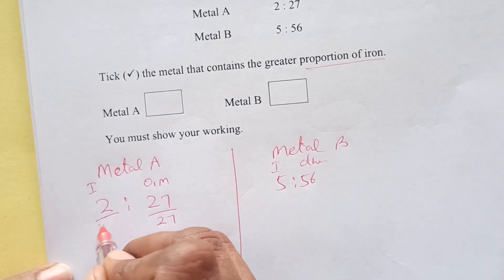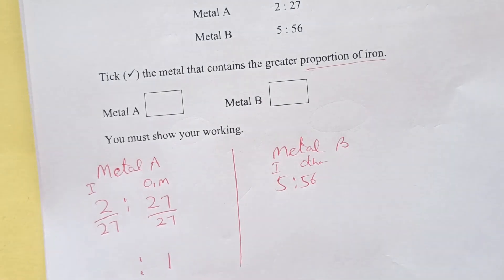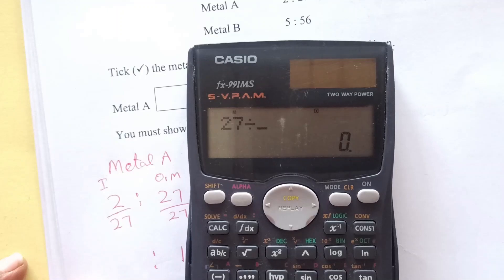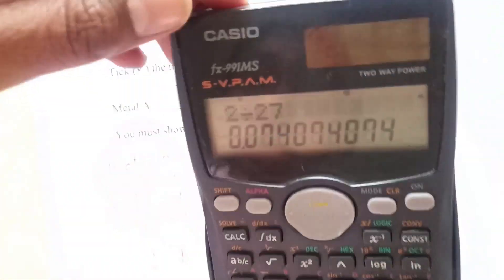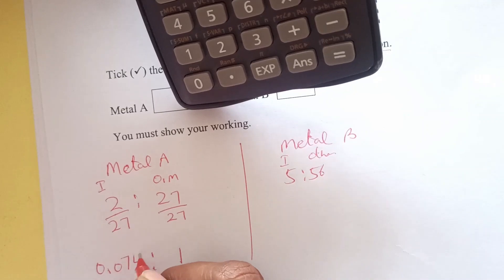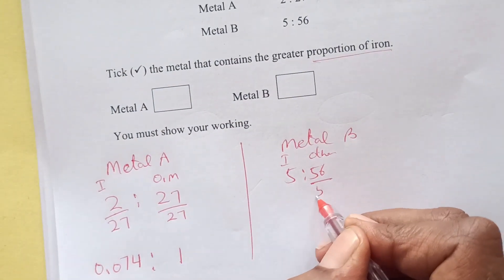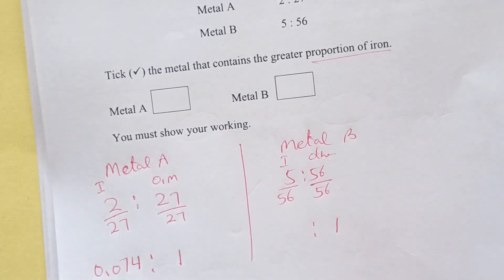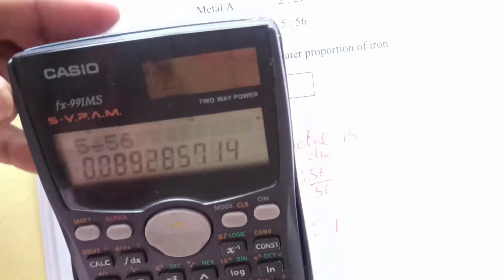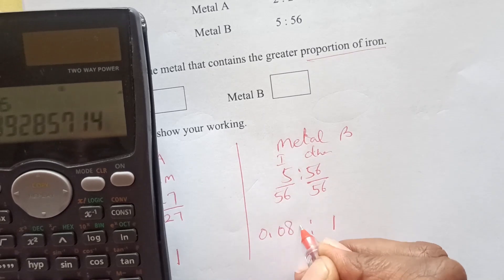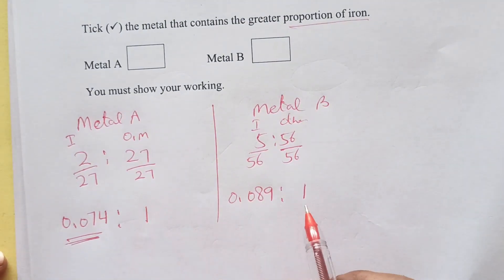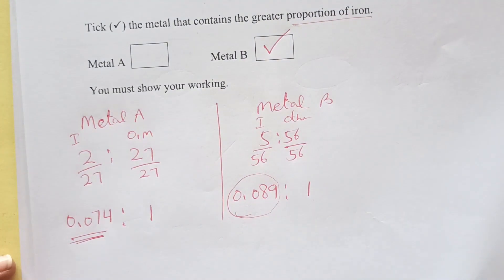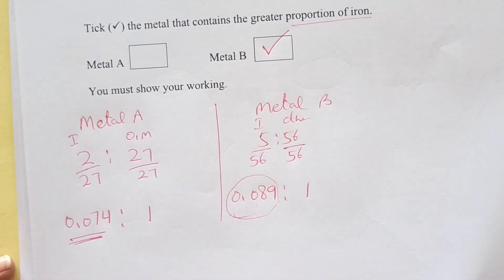This is metal A: 2 ratio 27. This is metal B: 5 ratio 56. Iron and other material. We are basically trying to compare iron. If I divide this by 27 both sides, I will get 1 here, then 2 divided by 27 is 0.074. And this side, divide by 56 on both sides, I get 1 here and 5 divided by 56 is 0.089. This is the quantity of iron if the other metal is 1, so we can easily compare. The greater one is for metal B. 0.089 is greater than 0.074.